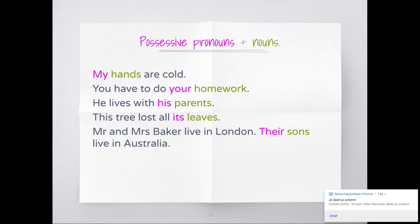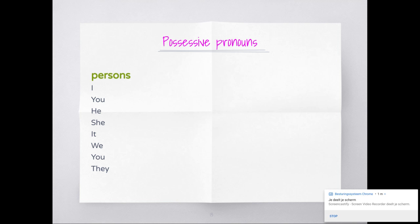Mr. and Mrs. Baker live in London. Their sons live in Australia. Mr. and Mrs. Baker - that's 'they,' so 'their sons' live in Australia. When you have persons, you know it's a personal pronoun, not possessive, but with personal pronouns you get the same possessive pronouns.